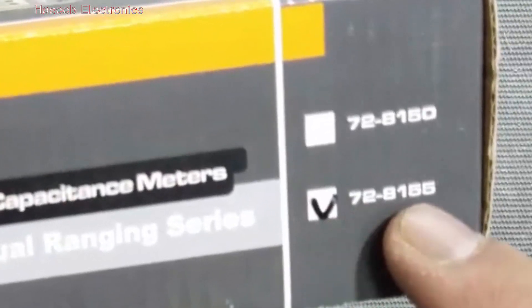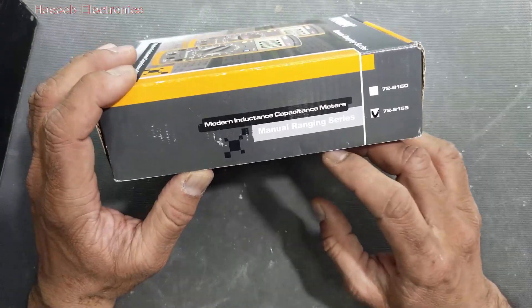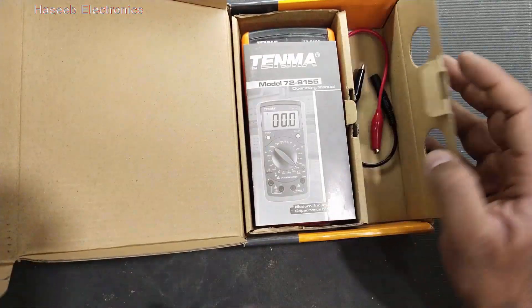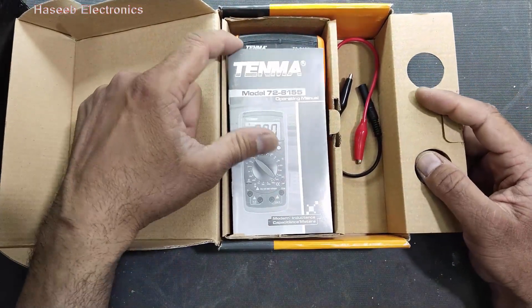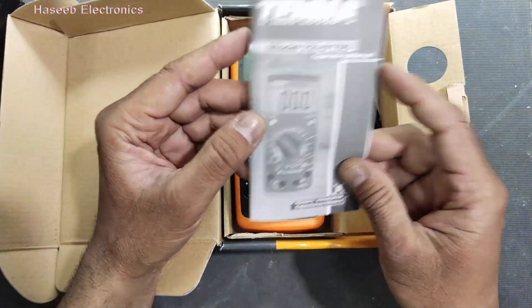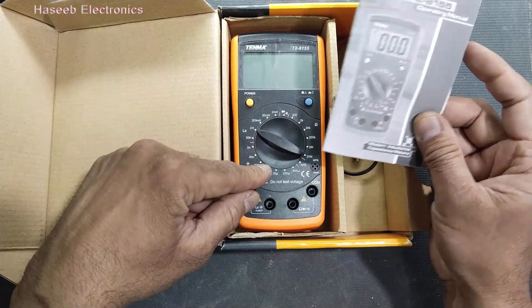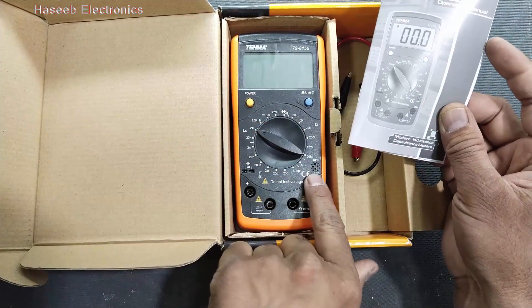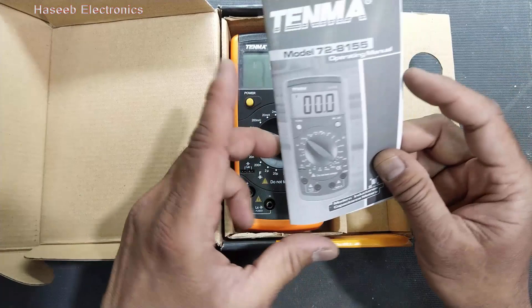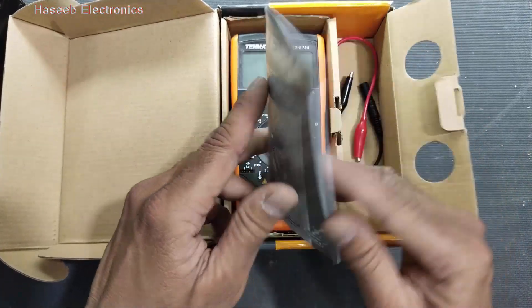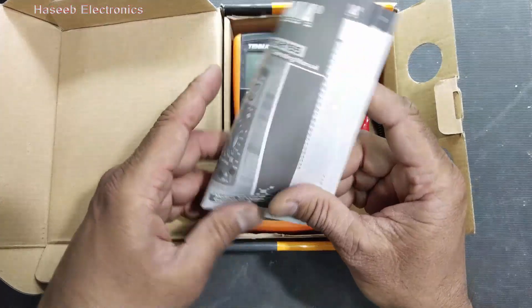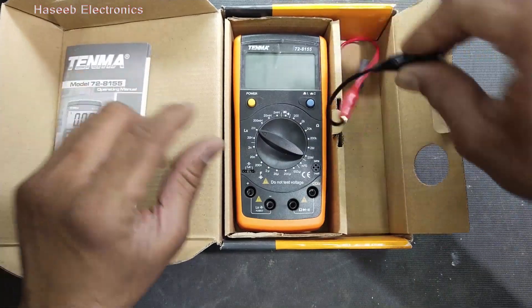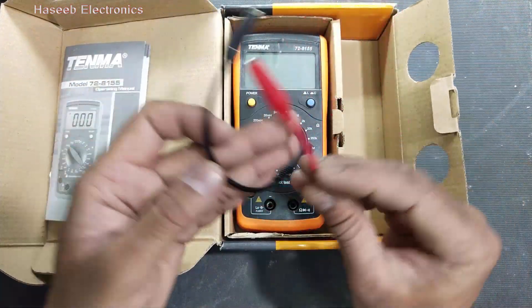It is 72-8155 manual ranging meter. It is LCR - inductor, capacitor, resistor, and it also tests diodes and continuity. So it is from TENMA USA. Operating manual and it comes with two test leads.